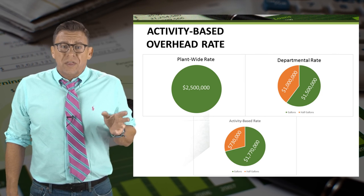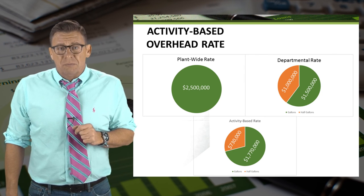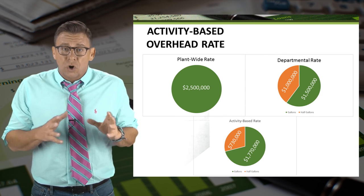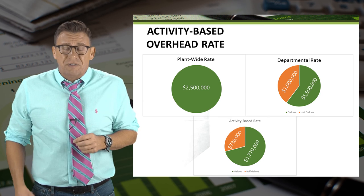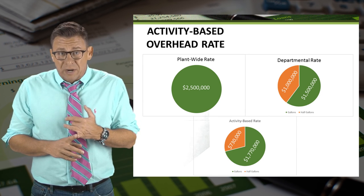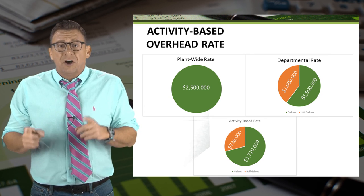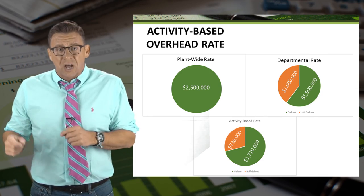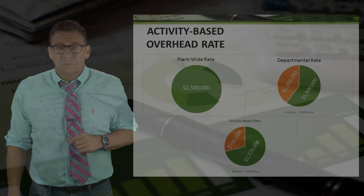So with a more refined overhead allocation method, you can see that gallons end up being allocated more overhead than with a less refined method. This means that using a plant-wide rate or departmental rates, we've over-costed half gallons and under-costed gallons — demonstrating cost distortion.